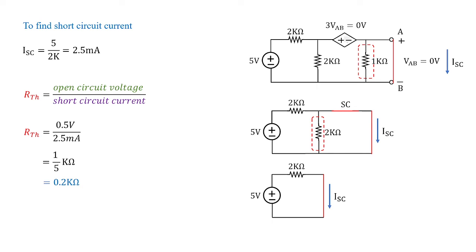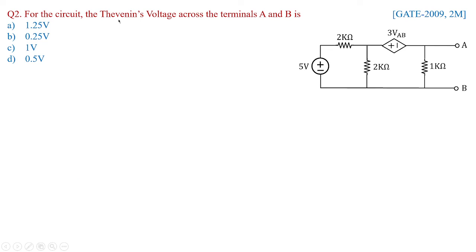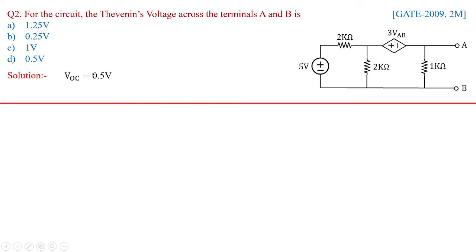This is how we solve these kinds of problems when dependent and independent sources are given. The Thevenin's voltage we already determined — according to the given options, option D is the right answer: VOC equals 0.5V. These types of questions are frequently asked in gate exams, especially linked statements with two questions. Let us go with the next problem.